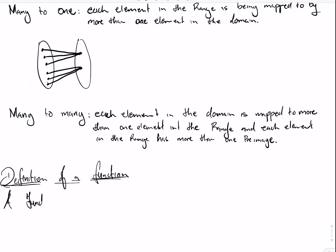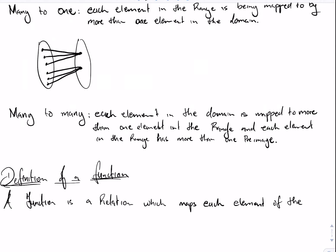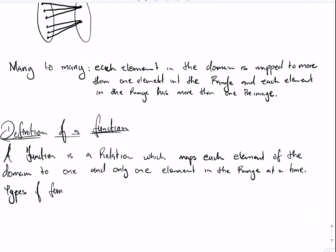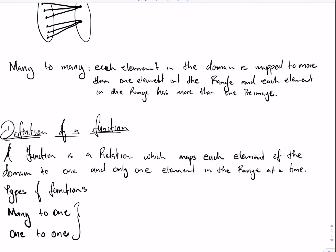We then move on to define what a function is. A function is a relation which maps each element from the domain to one and only one element in the range at a time. When we look at the set of relations, we realize that only two actually reflect what a function is — the many-to-one and the one-to-one. So a function can be many-to-one or one-to-one.